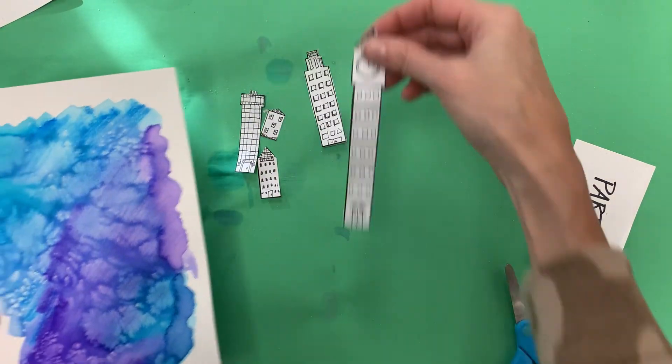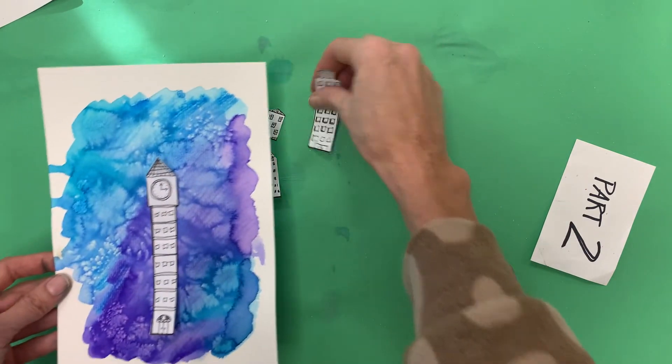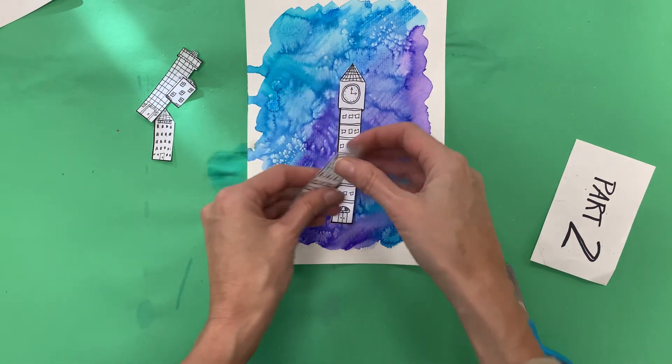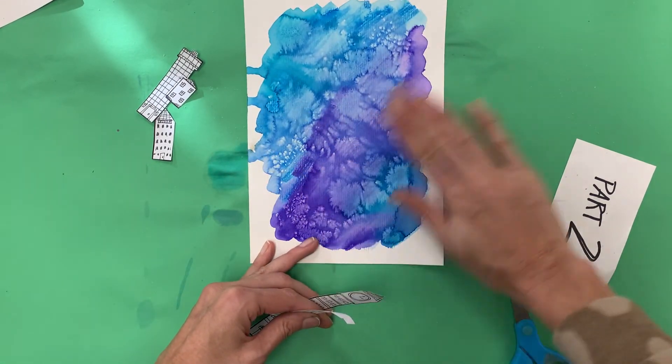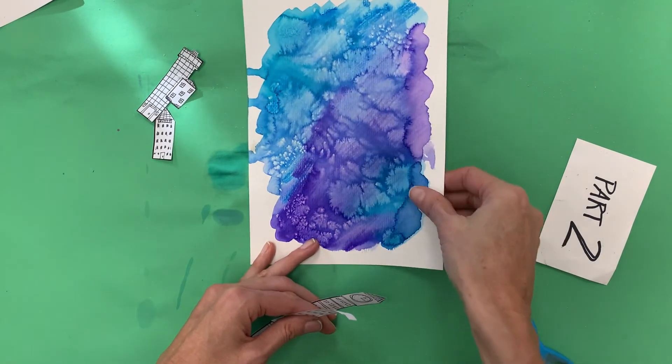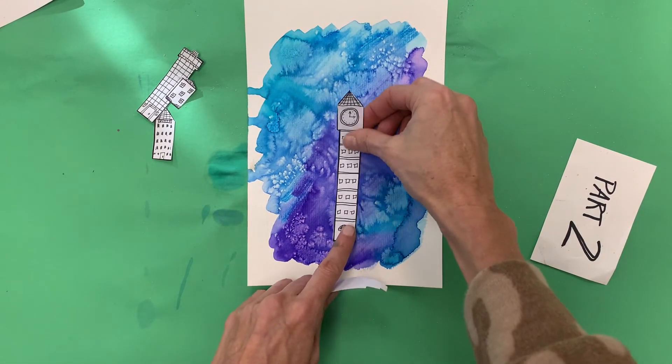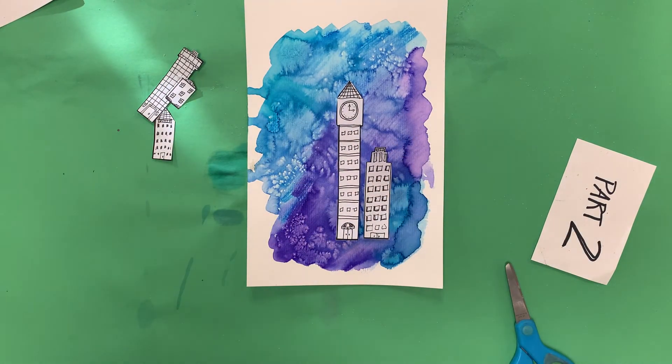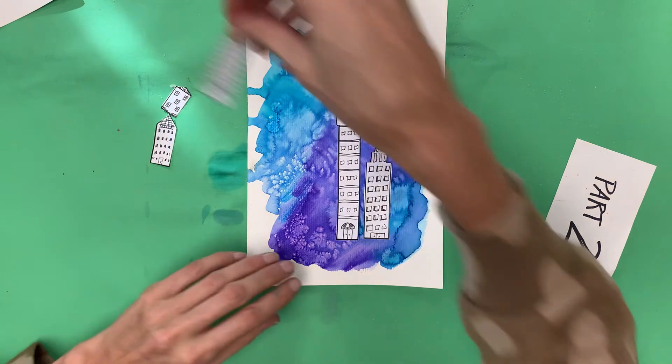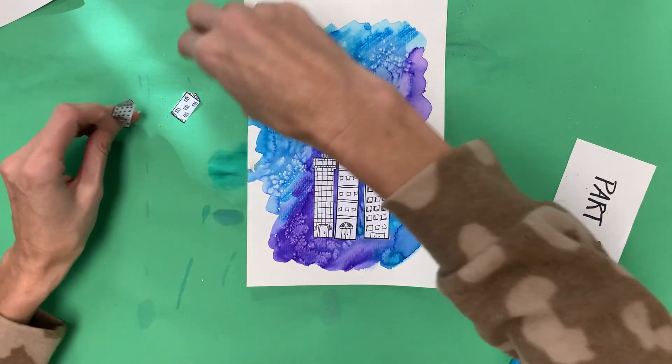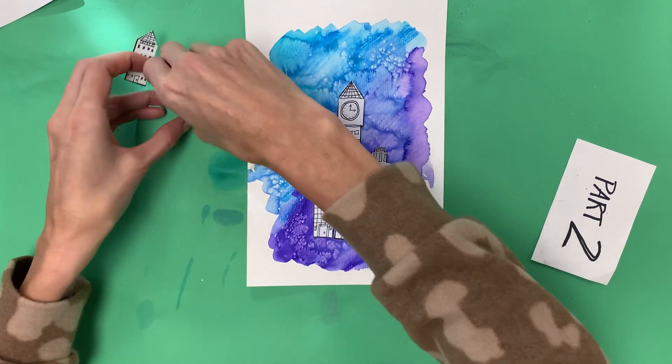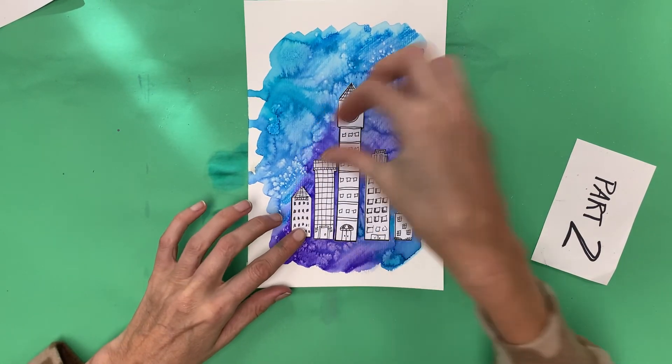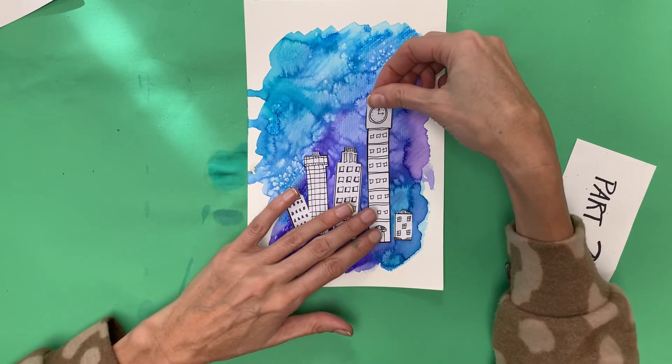So the first thing you want to do is sort of lay them down and see where they're going to look good. Don't commit to gluing them just yet, and you also might want to give a quick little rub to get the extra salt off, because glue in my experience does not stick to salt. There's a couple of ways that you can do this. What I like to do is I figure out where I want my buildings to go first. Maybe like this. Maybe this. I kind of like that.